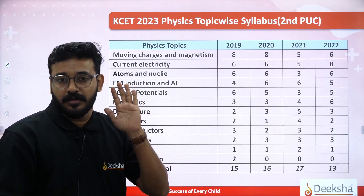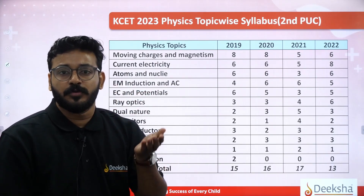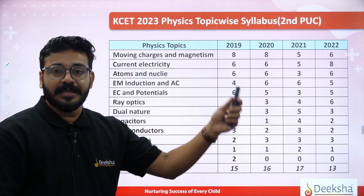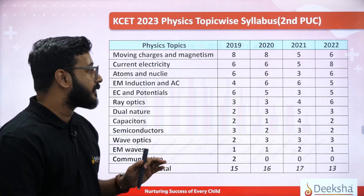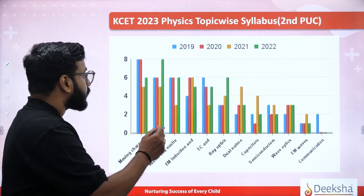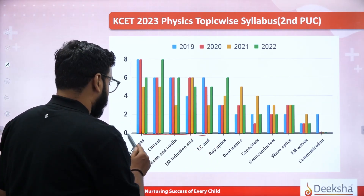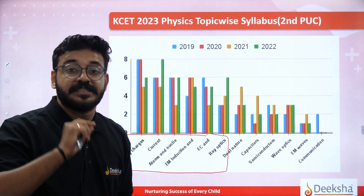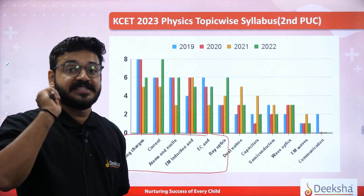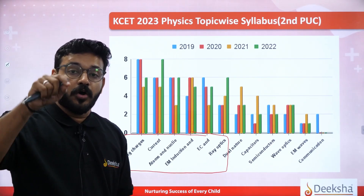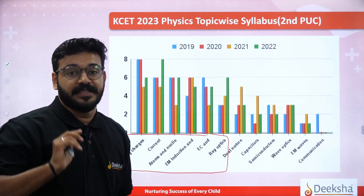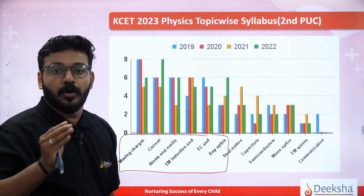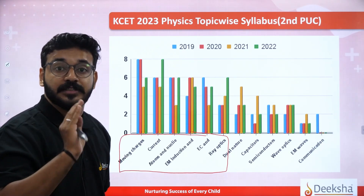If you want to use the PPT, you can access it. Let's see the graph — these are the main chapters. In the second PUC, it's a very big number of questions. Your major focus has to be on second PUC — about 75 to 80%. In the 60-mark paper, you can score well from second PUC, so the second PUC content is very strong.